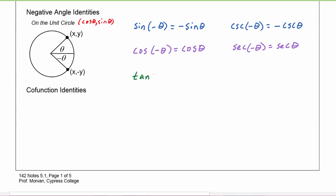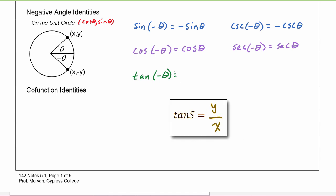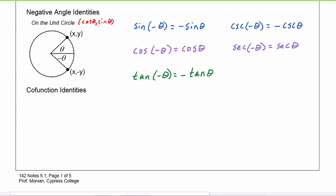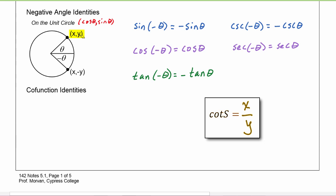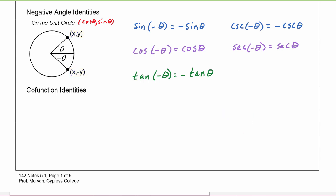If we look at tangent of negative theta, we know that tangent is y over x. So here this is going to be negative y over x, and at theta it's y over x — those numbers are opposites of each other. So tangent of negative theta is negative tangent theta. We can extrapolate that to the cotangent because cotangent is just the x value divided by the y value, so cotangent of negative theta is going to be the opposite of cotangent theta: cotangent of negative theta equals negative cotangent theta.